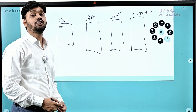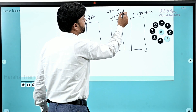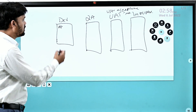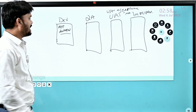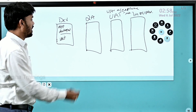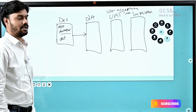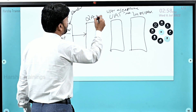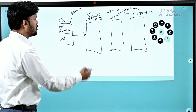Dev means Development, QA means Quality Assurance or Quality Analysis, and UAT means User Acceptance Testing. Application development will be done on the development server. After development is done, it will be unit tested by the developer, and once everything is fine those functionalities will be moved to the QA server. The QA server is accessed by testers and may also be called the testing server, though the term QA server is most commonly used.